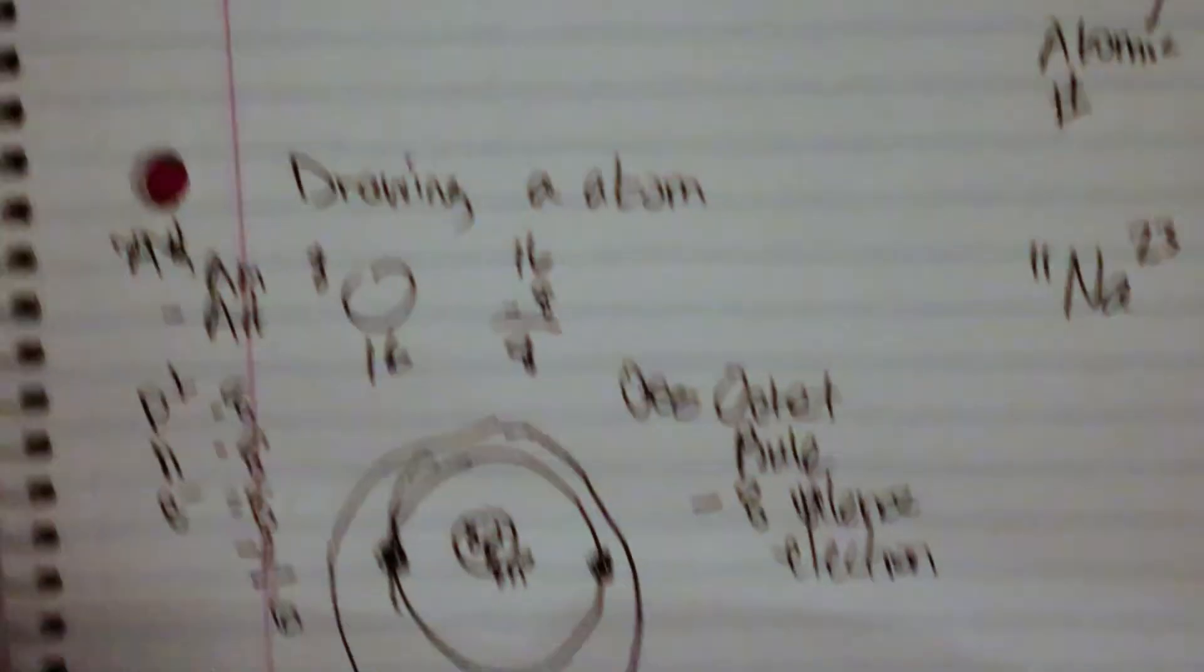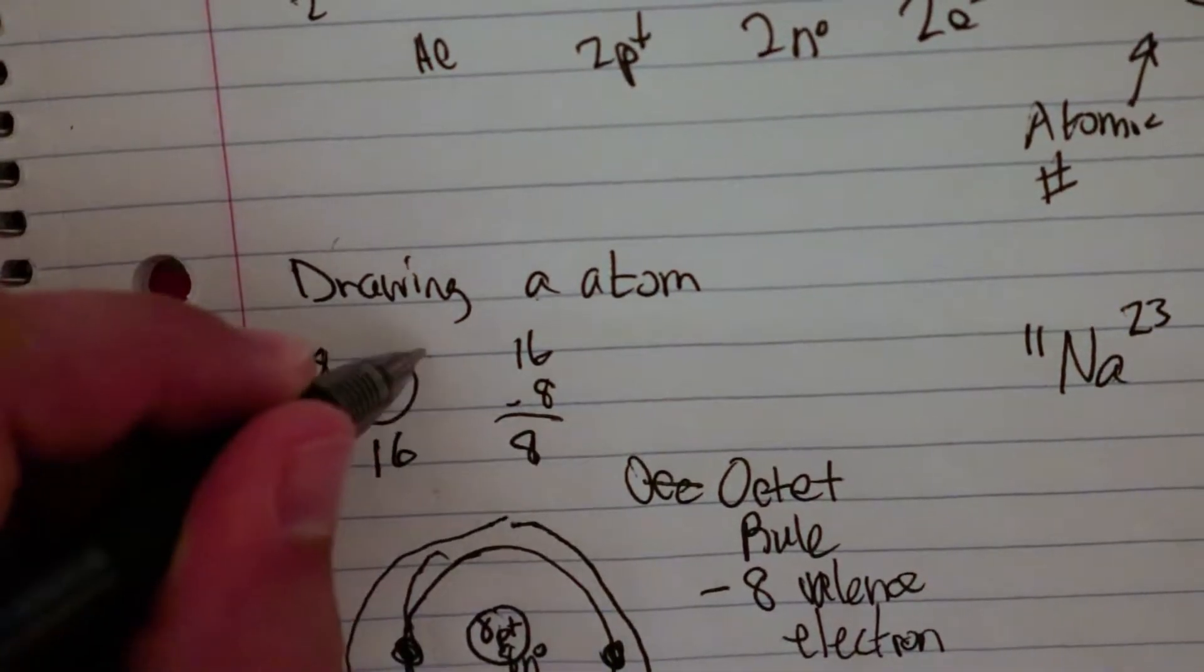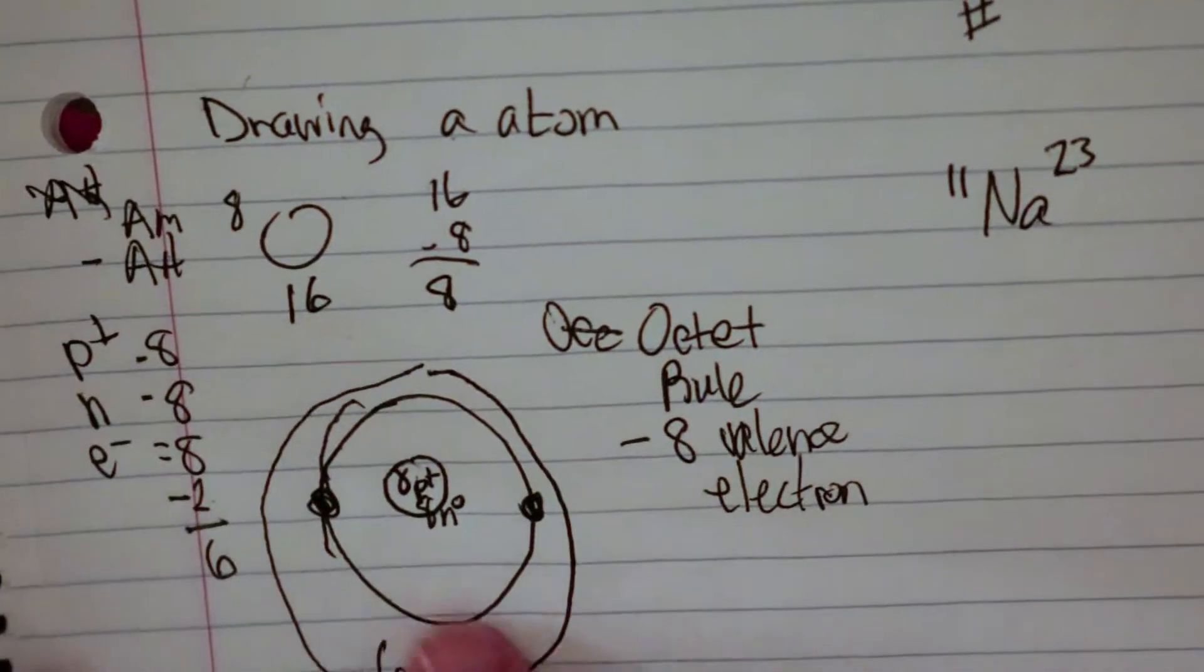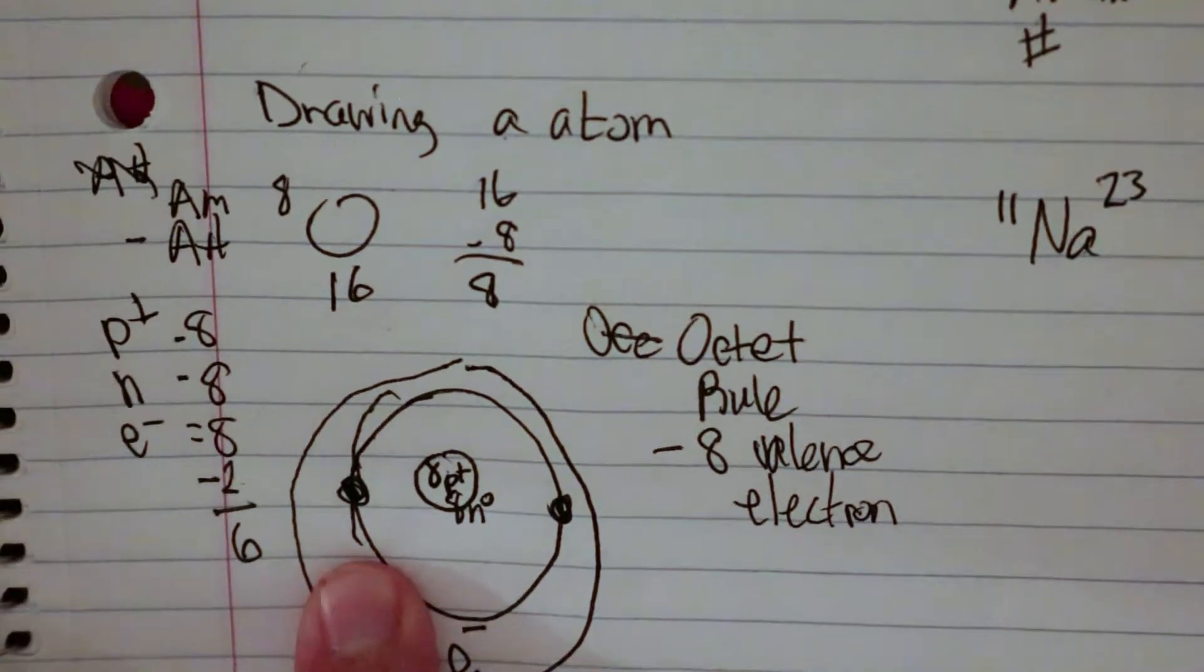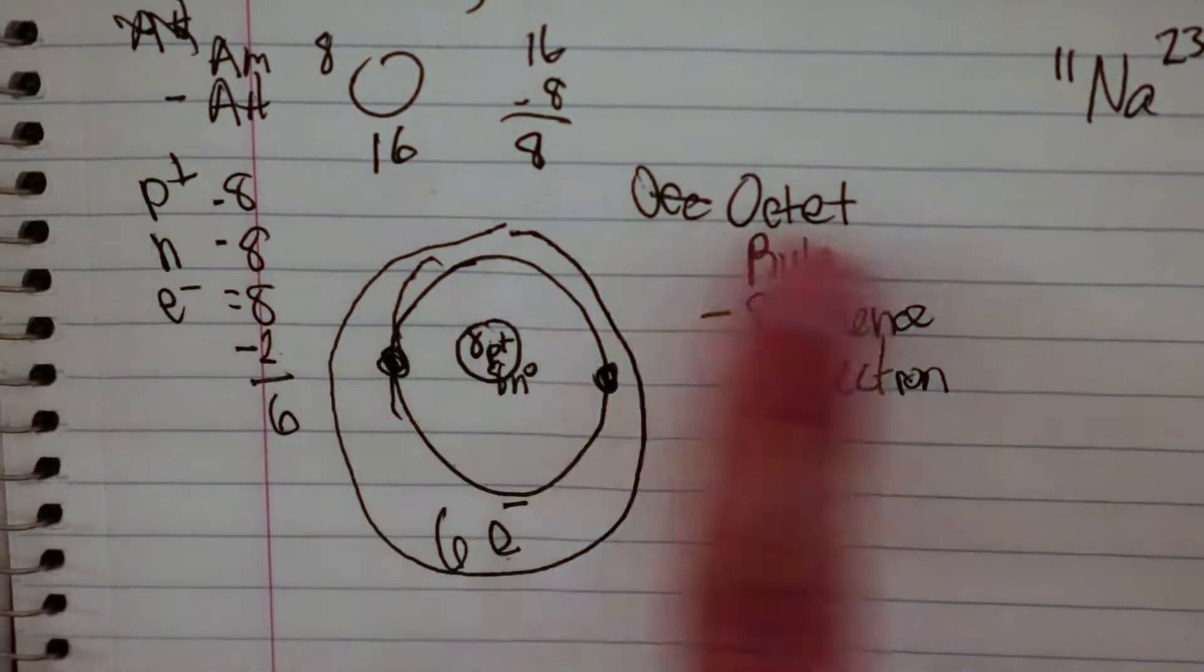So if we gave it 2 more electrons, it would get a 2 minus charge. But right now, for drawing the Bohr model, 8 protons, 8 neutrons, 2 electrons in the first energy level, 6 electrons in the outer energy level.